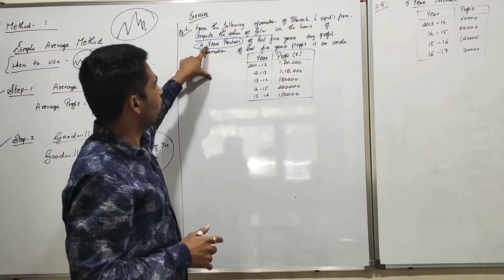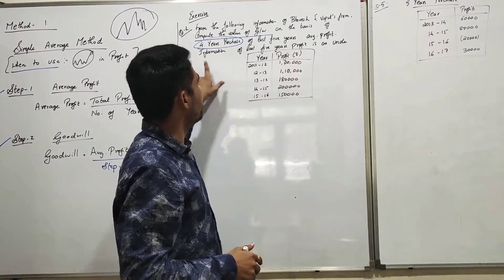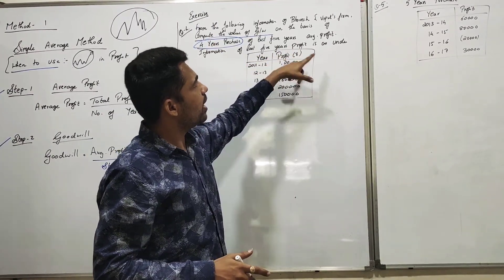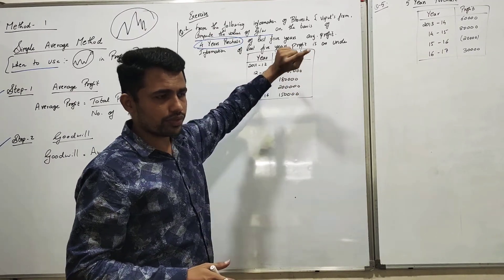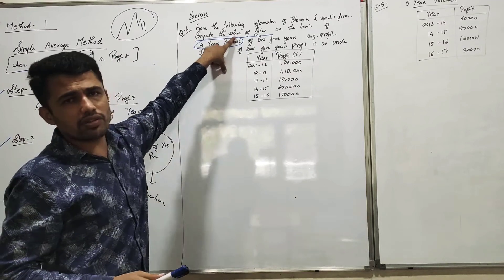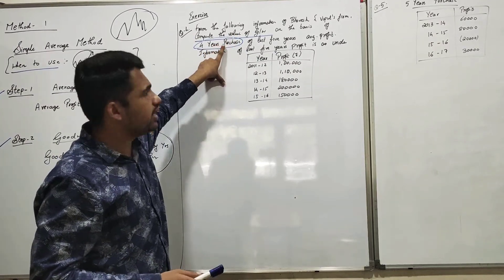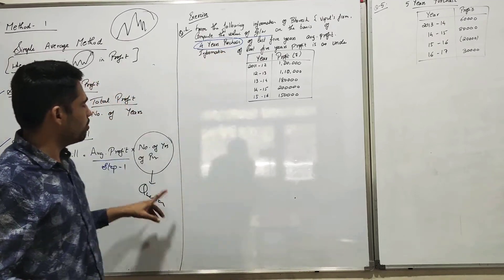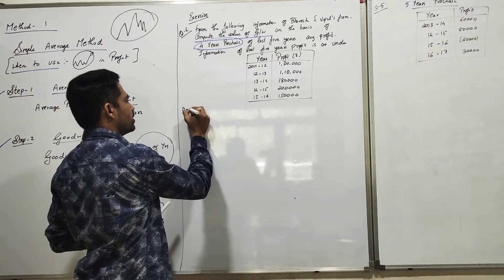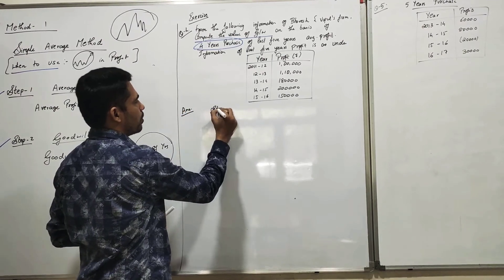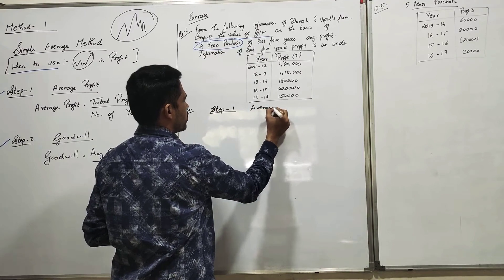It is clearly specified in the question: four years purchase of last five years average profit. The information of last five years profit is given as year and profit. We are supposed to find out the value of goodwill, and the number of years of purchase is four. We are starting with the answer — Step One.